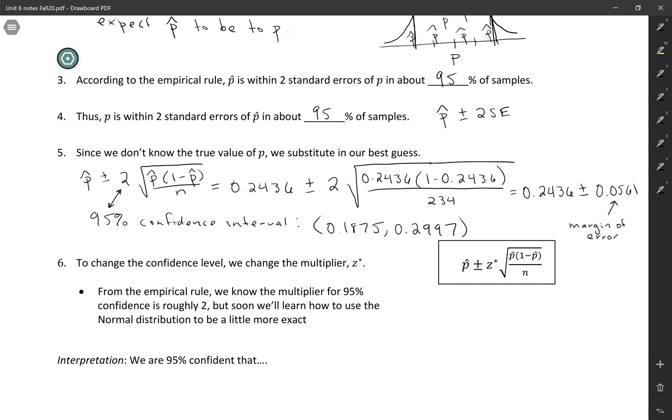But if we want to change the confidence level, we're going to use the normal distribution to figure out what that multiplier should be. And that multiplier in general is called Z star. So we'll see how to find Z star in a later video.